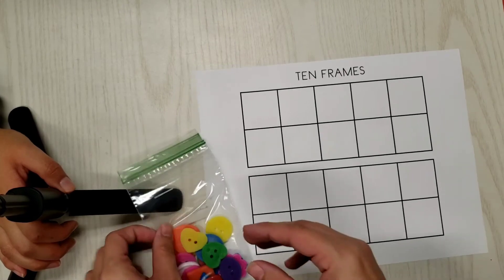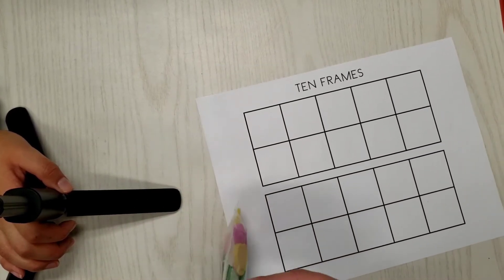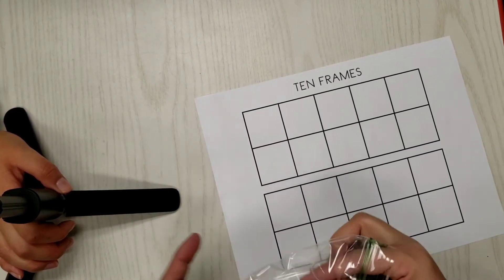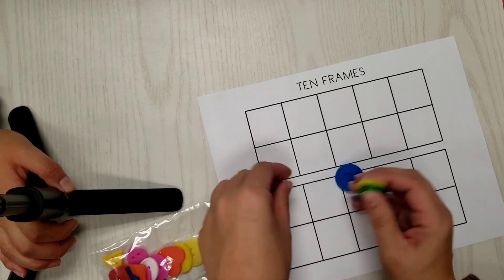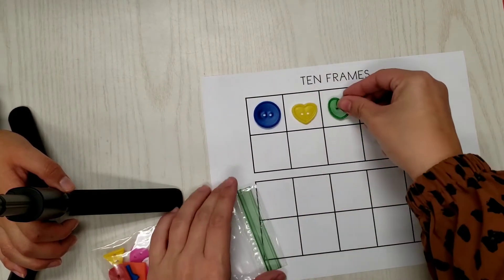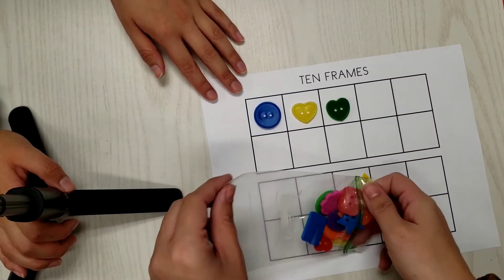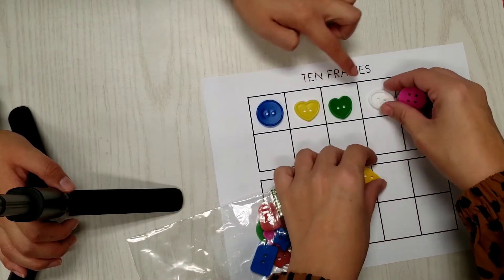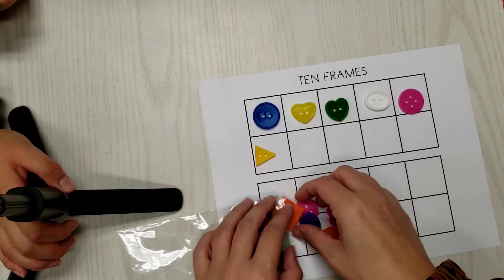So, what you want your child to do is go ahead and take the buttons, and they're going to put one button in each square on the 10-frame. Entonces, lo que van a hacer es que sus hijos van a agarrar los botones y van a poner un botón en cada cuadro, para así contar 10.